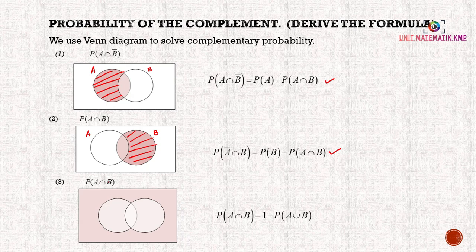And for the third one, probability of A' ∩ B', meaning probability of everything except A and B. The outer area cannot include A or B. To find this probability, the shaded area, we take 1 which is the total probability minus probability of A ∪ B. A ∪ B is the middle part here, so we get this as the formula.